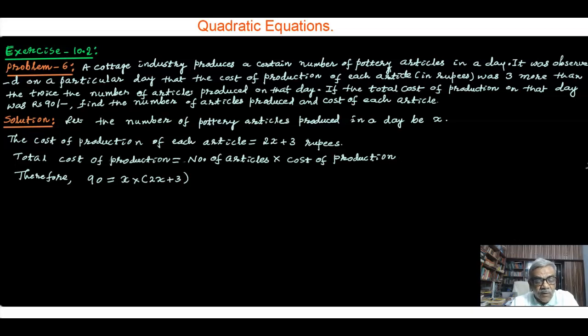Therefore, we can see this is going to be 90 equal to 2x square plus 3x. And that is 2x square plus 3x minus 90 equal to 0. I will take the left hand side 90 to the right hand side. Therefore, I would like to write down in standard form that is 2x square plus 3x minus 90 equal to 0.